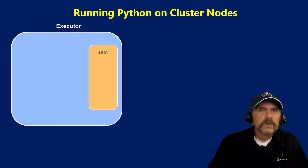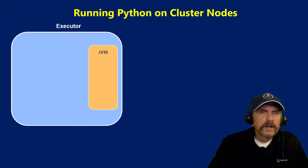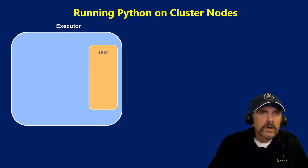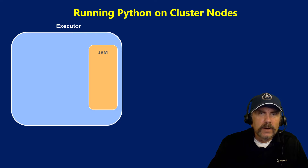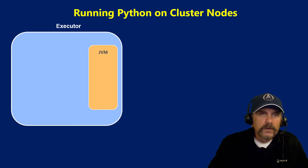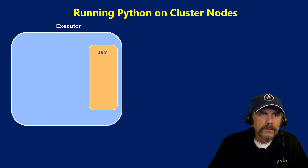Let's start by talking about the way code runs on a Spark cluster. We have any number of nodes, and the nodes are the way the work is split up. As we've learned before, the data is partitioned and sent out to the different nodes. And on the nodes, we can have one or more executors. Executors are where the real work happens.